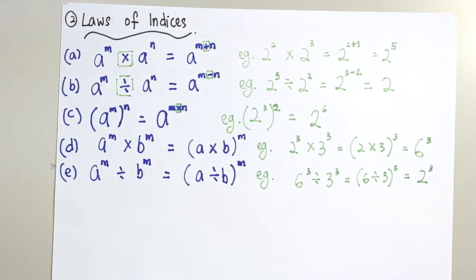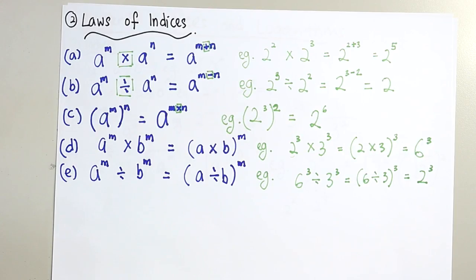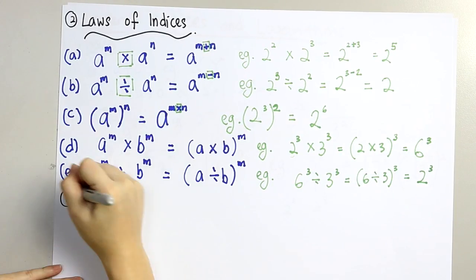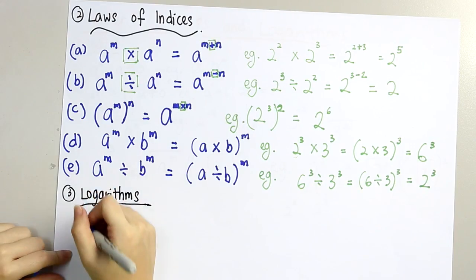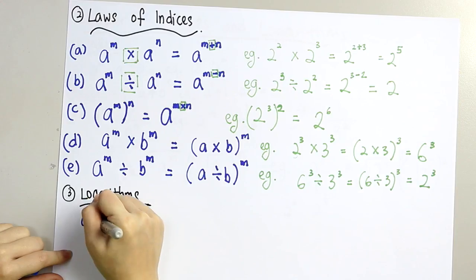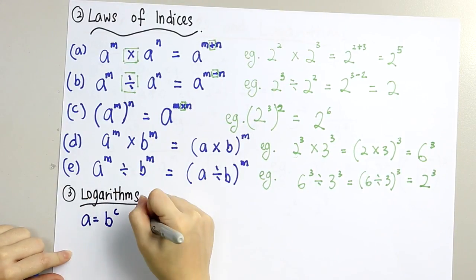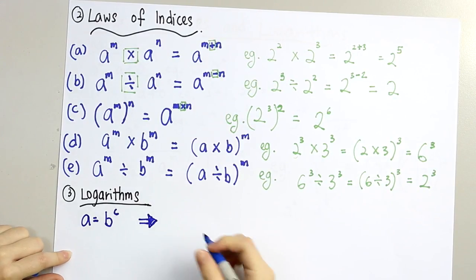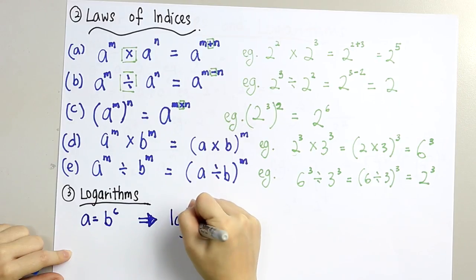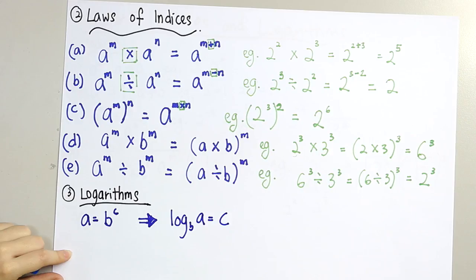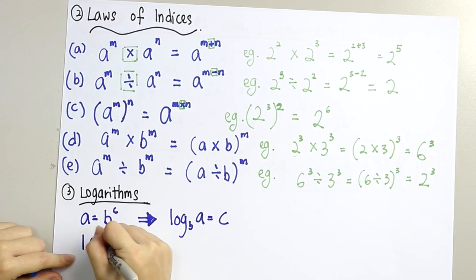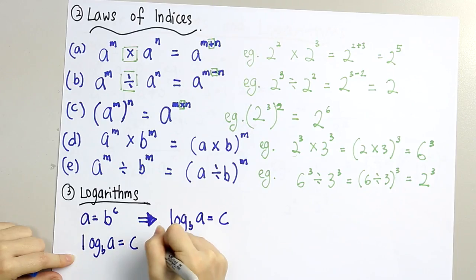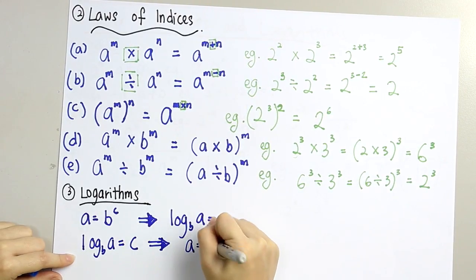This is the laws of indices. And then we go to logarithms. For logarithms, when a is equal to b to the power of c, then log base b of a is equal to c. And vice versa: when log base b of a is equal to c, then a is equal to b to the power of c.